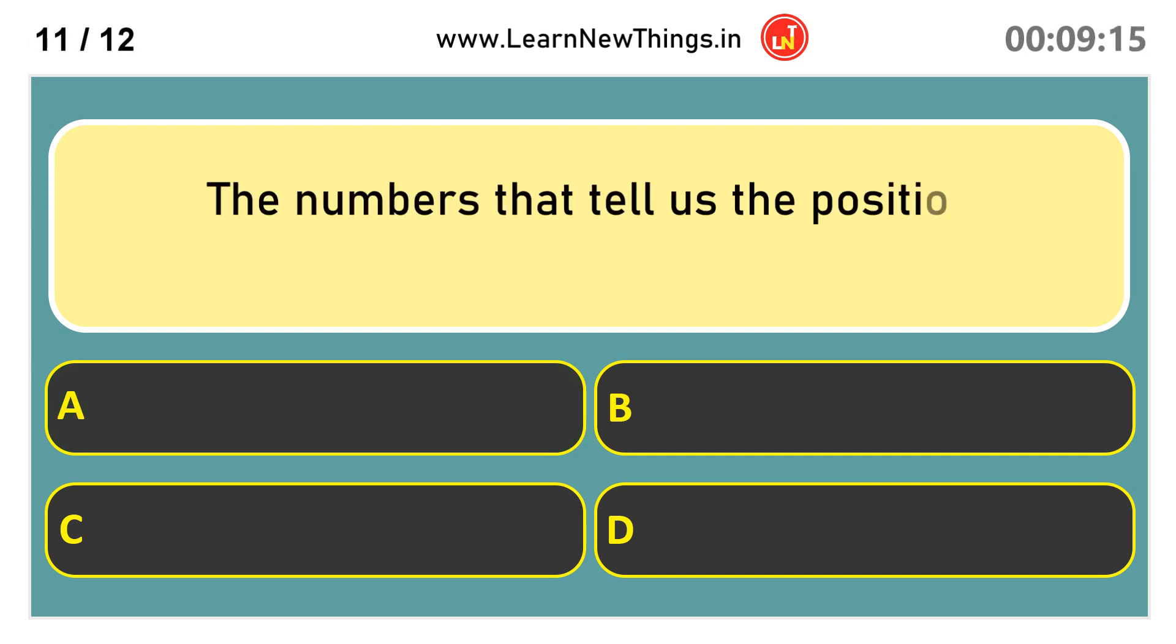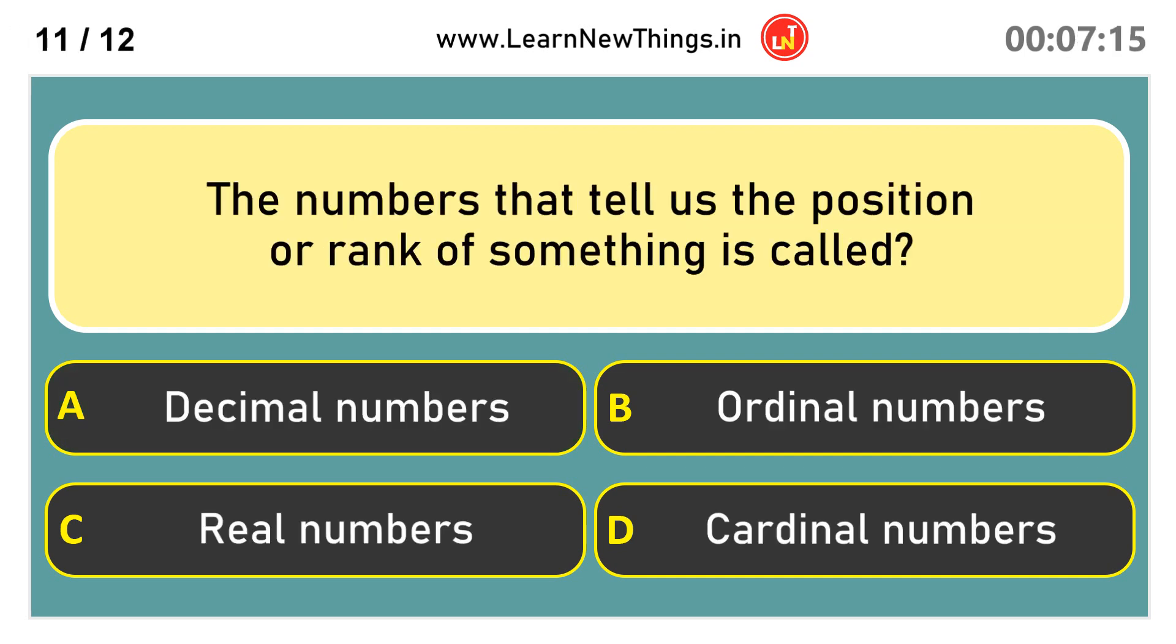The numbers that tell us the position or rank of something is called ordinal numbers.